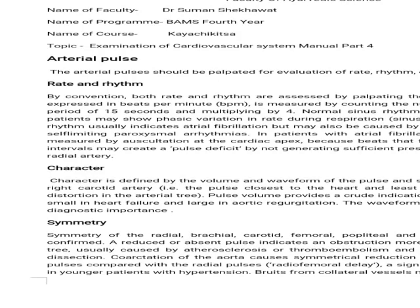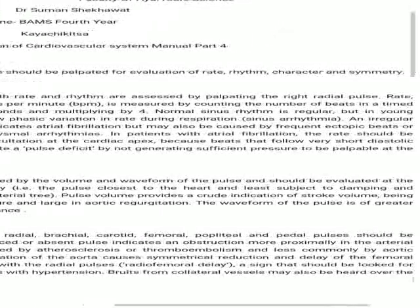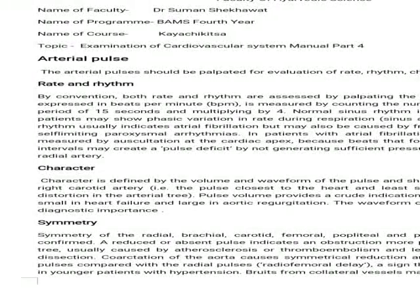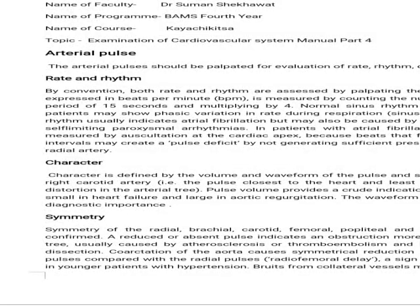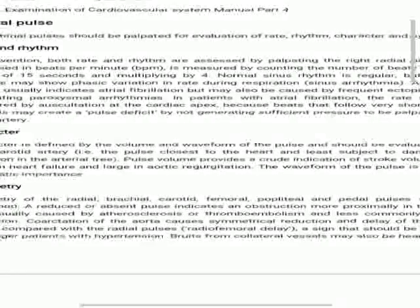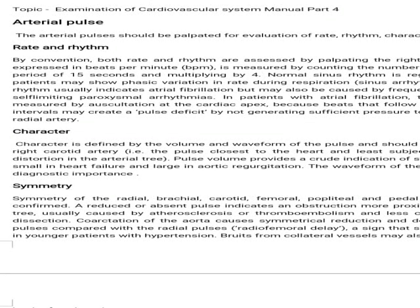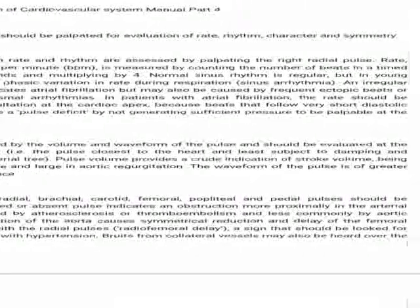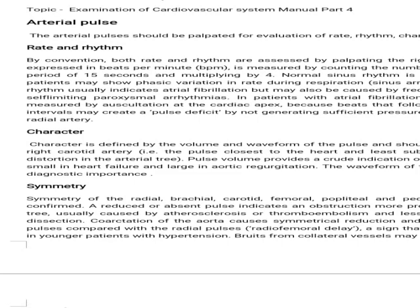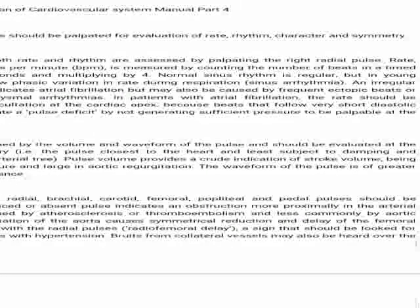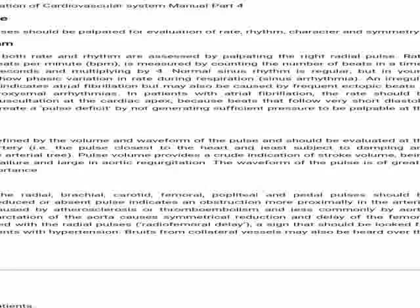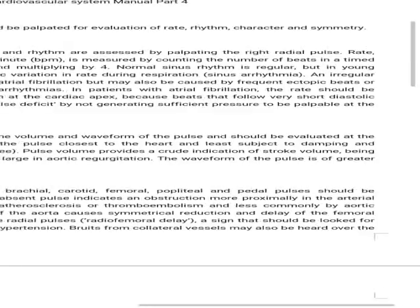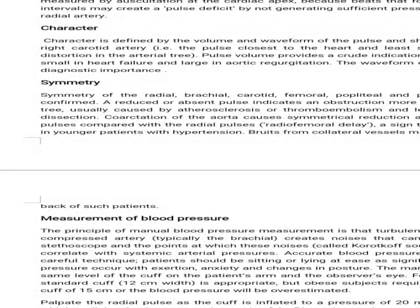Symmetry of the radial, brachial, carotid, femoral, popliteal, and pedal pulses should be confirmed. A reduced or absent pulse indicates an obstruction more proximally in the arterial tree, usually caused by atherosclerosis and thromboembolism, and less commonly by aortic dissection. Coarctation of the aorta causes symmetrical reduction and delay of the femoral pulses compared with the radial pulses. Radiofemoral delay is a sign that should be looked for in younger patients with hypertension. Bruits from collateral vessels may also be heard over the back of the patient.